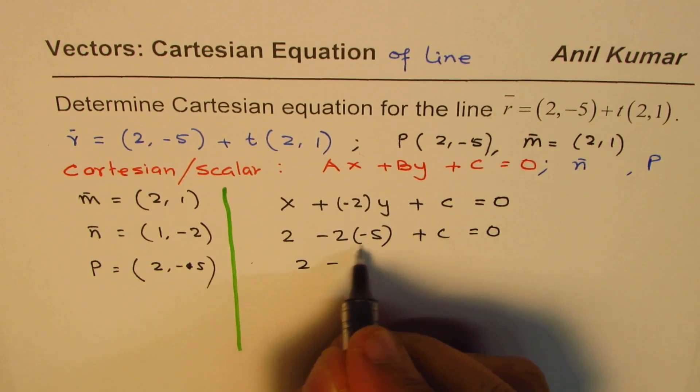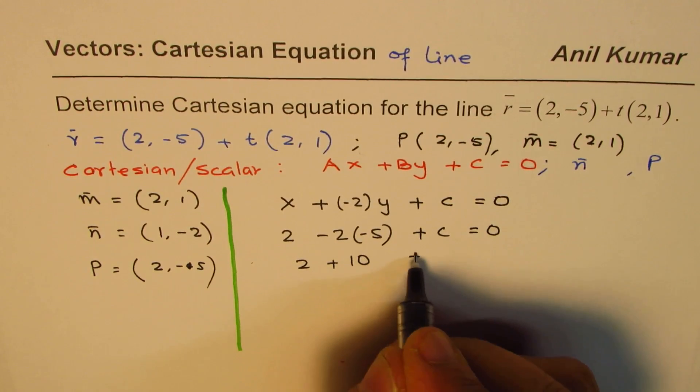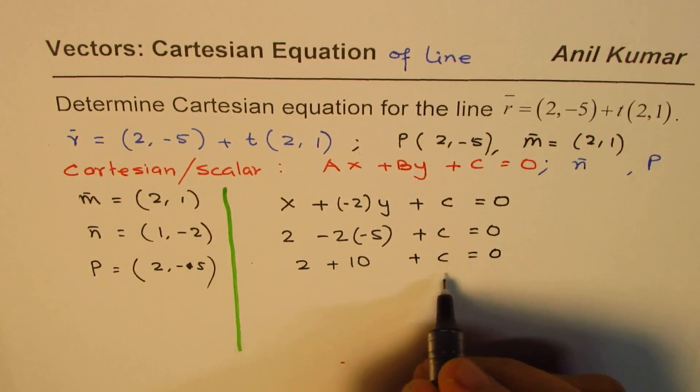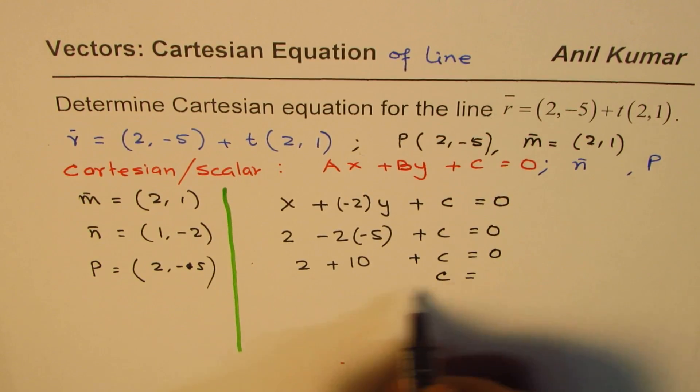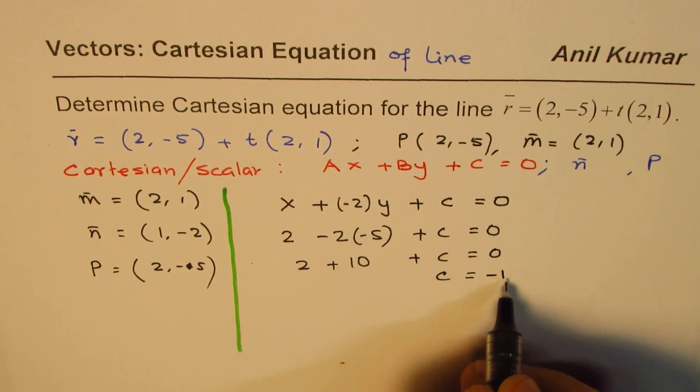That gives us 2 minus, and minus becomes plus 10, plus C equals 0. And that is to say that C is equal to, this is 12 minus 12.